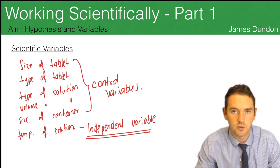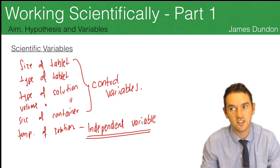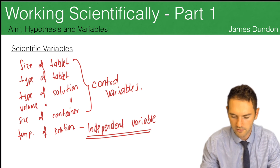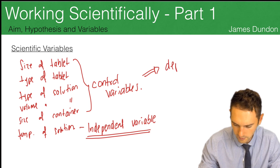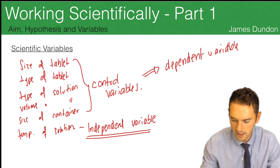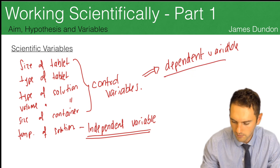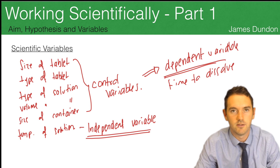But we still need one more variable — that's the variable we need to include to make sure we can actually see if the independent variable is having an effect. We call that our dependent variable, because it depends on our independent variable. So these two are connected, and we're going to measure the time to dissolve. And that's going to be our dependent variable.